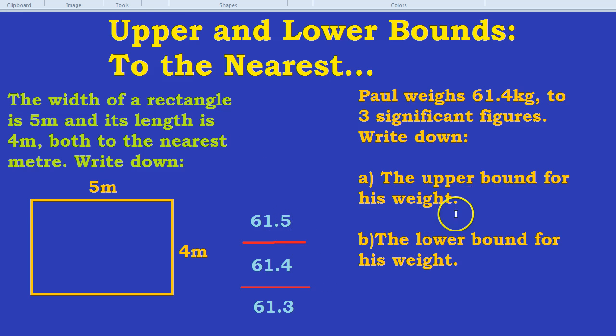That would be 61.45. 61.45. Remember my tip that it usually ends in a 5. It's almost like, what's halfway between 61.40 and 61.50? It's 61.45. That's the upper bound.